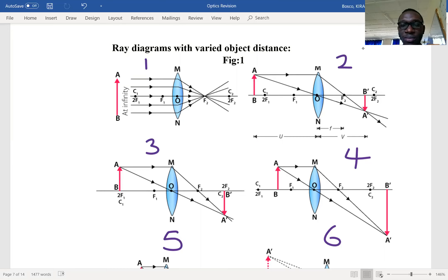In the diagram we are seeing here, O represents the optical center of the lens, F represents the focal point, and C represents the center of curvature of the lens. I want you to take time and analyze one diagram at a time.